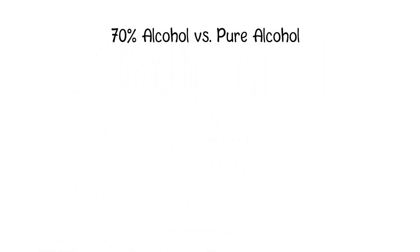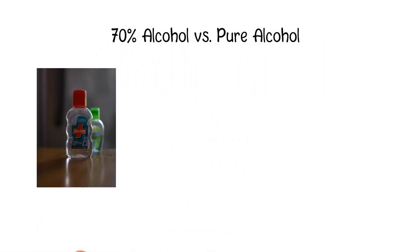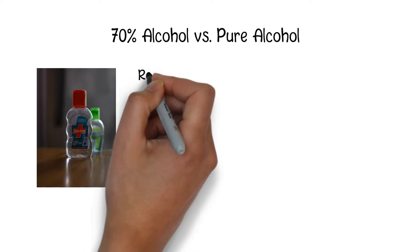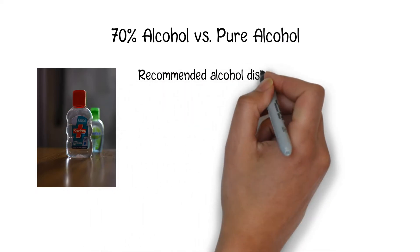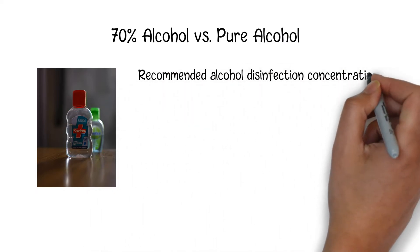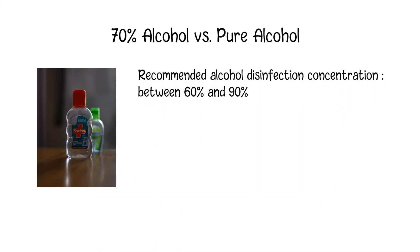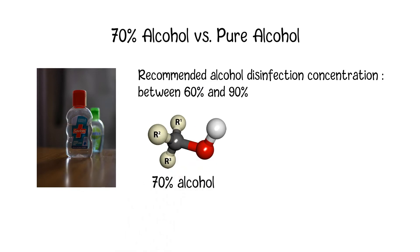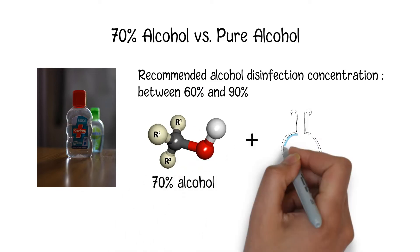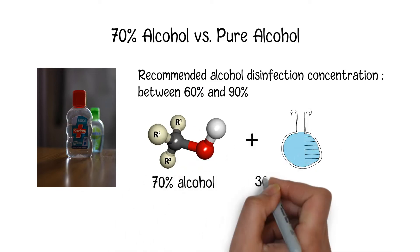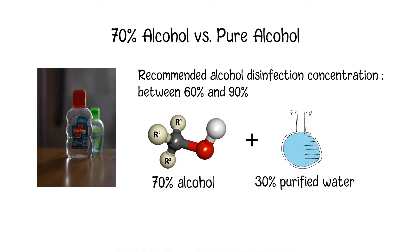Generally, it is recommended to use an alcohol concentration of between 60 and 90 percent for disinfection purposes, and the most commonly used concentration level is 70 percent, which means pure ethanol or isopropanol diluted with 30 percent purified water by volume.